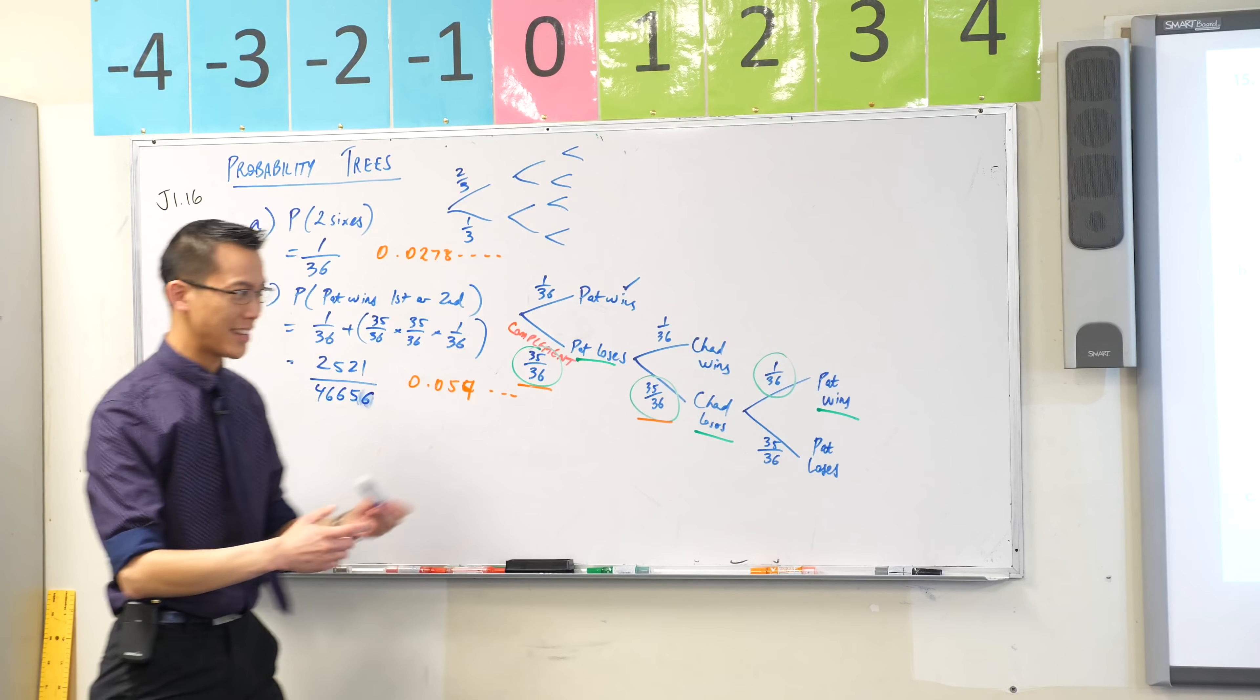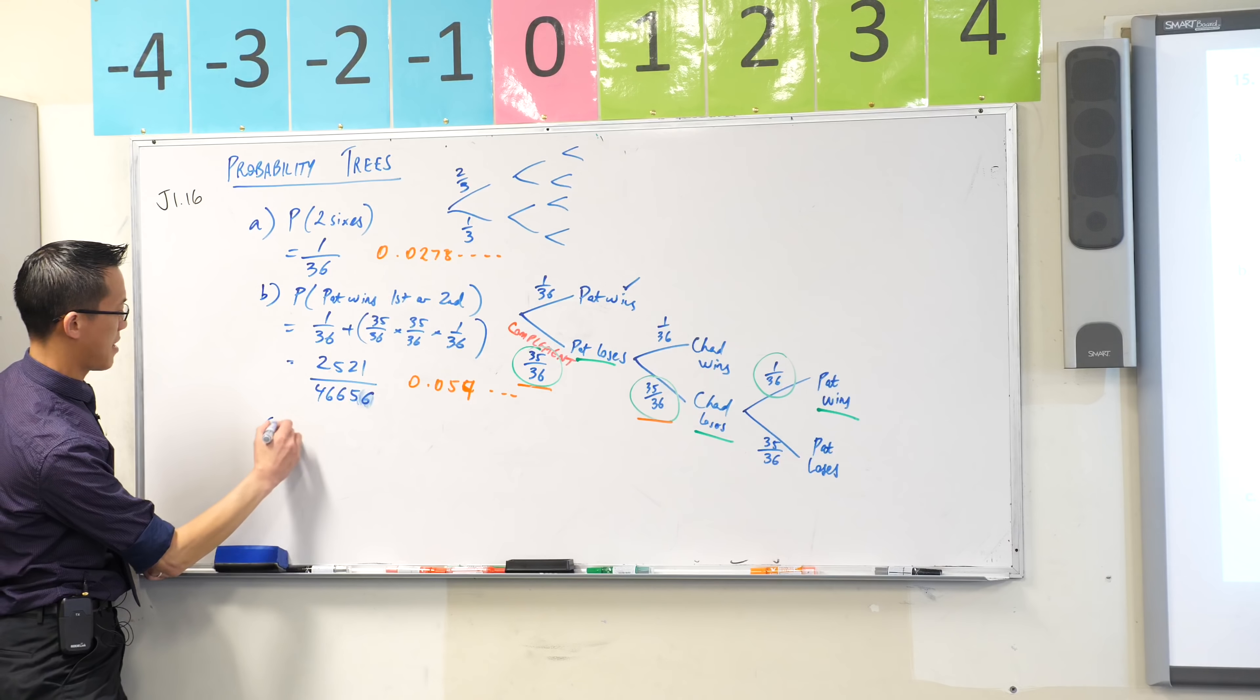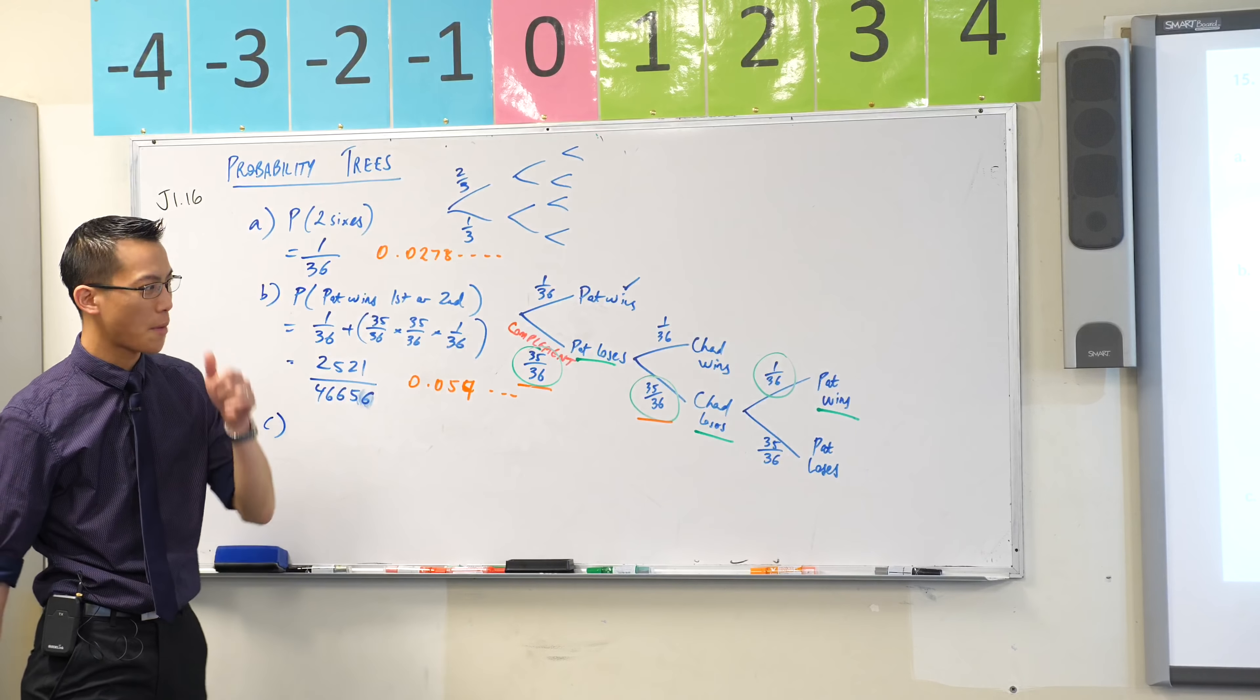Now, then the final question, and again, it's all about the language, isn't it? Part C: Find the probability that Pat eventually wins. Eventually. We don't usually see words like that in questions like this.